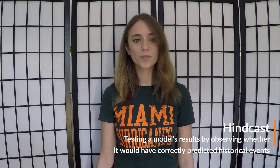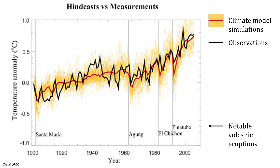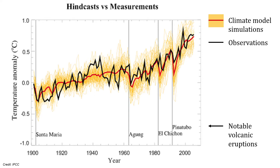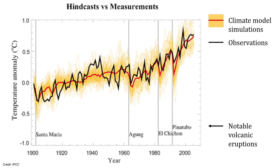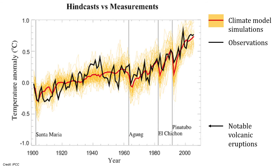So how do we know if a climate model is good enough? We can hindcast. We already have records of weather and climate over the last century. So we can begin a simulation in the past, let's say 1900, and run the model until it reaches present day. Then we can compare the model's results to observations. While the details are not exactly perfect, many of the models we use today generally simulate what has happened in the past.